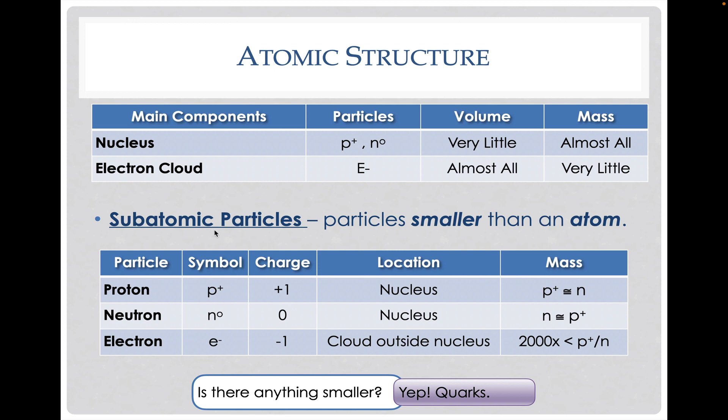A little bit more information about these subatomic particles. Basically these are particles that are smaller than the atom. We have a proton, neutron, and electron. We have the symbolism for them, the charges that they represent, where they're located, and the relative masses that they have. One thing to note is, is there anything smaller? Absolutely. There are things smaller than protons, neutrons, and electrons. In particular, there's a thing called quarks, which actually are the building blocks for the protons and neutrons. So we do have particles even smaller, but we won't discuss that in this class.